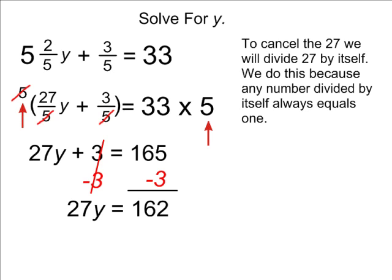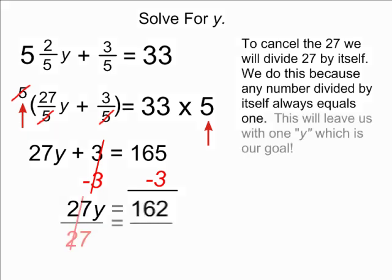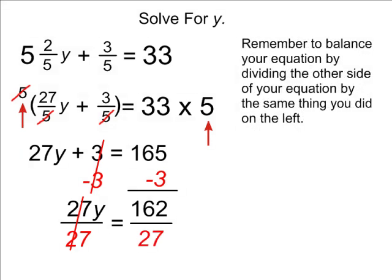To eliminate the 27, we simply divide it by itself because any number divided by itself is 1. This will give us 1y on the left-hand side of our equation. And then to balance out our equation,